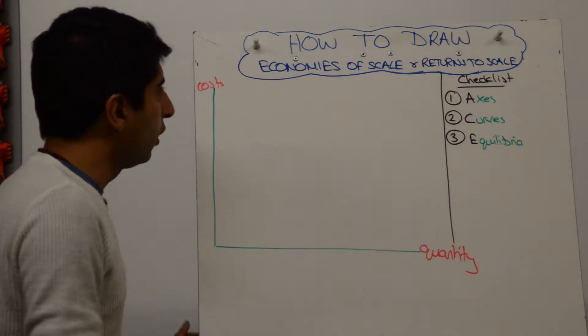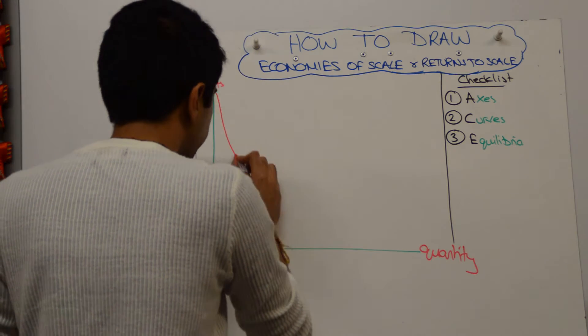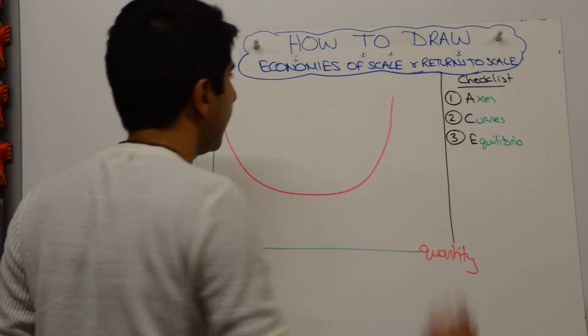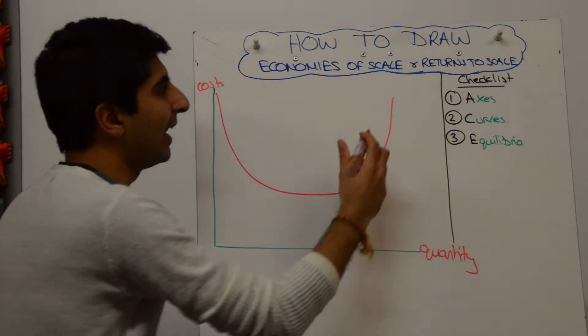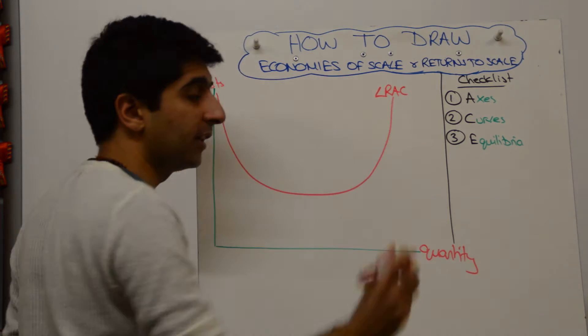Then we draw our long-run average cost curve. Draw this nice and big, a little bucket diagram like that, and label it straight away. Long-run average cost, don't forget to do that.